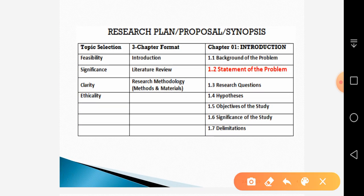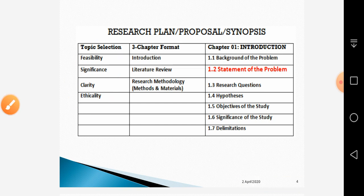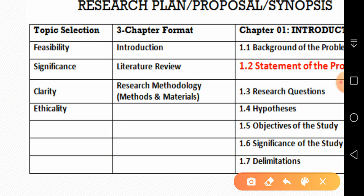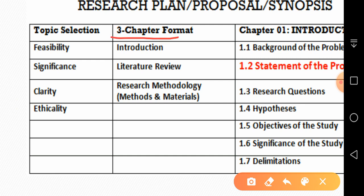A research proposal, as you can see on the screen, has three chapters. Before we write a research proposal or synopsis we have to select our topic. Topic selection is a very important part of the research phase. After the problem has been selected, we write a three-chapter report. These three chapters are introduction, literature review, and research methodology.